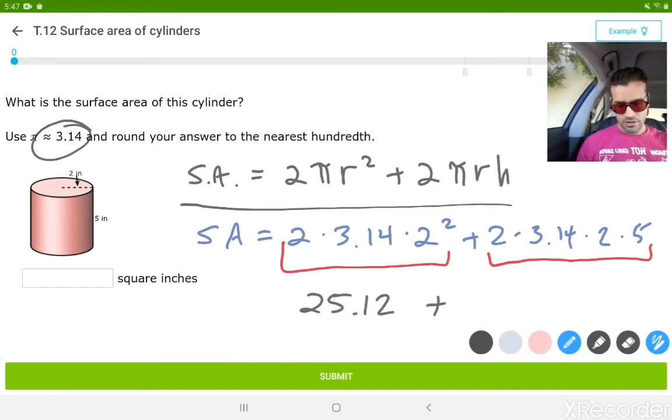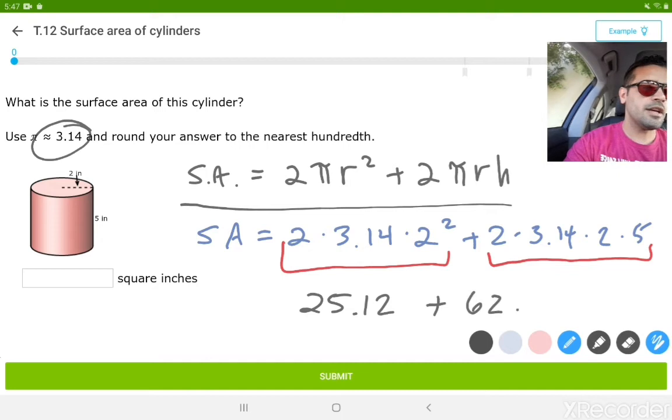Then we're going to do the other side. So 2 times 3.14 times 2 times 5, and we're going to get 62.8.